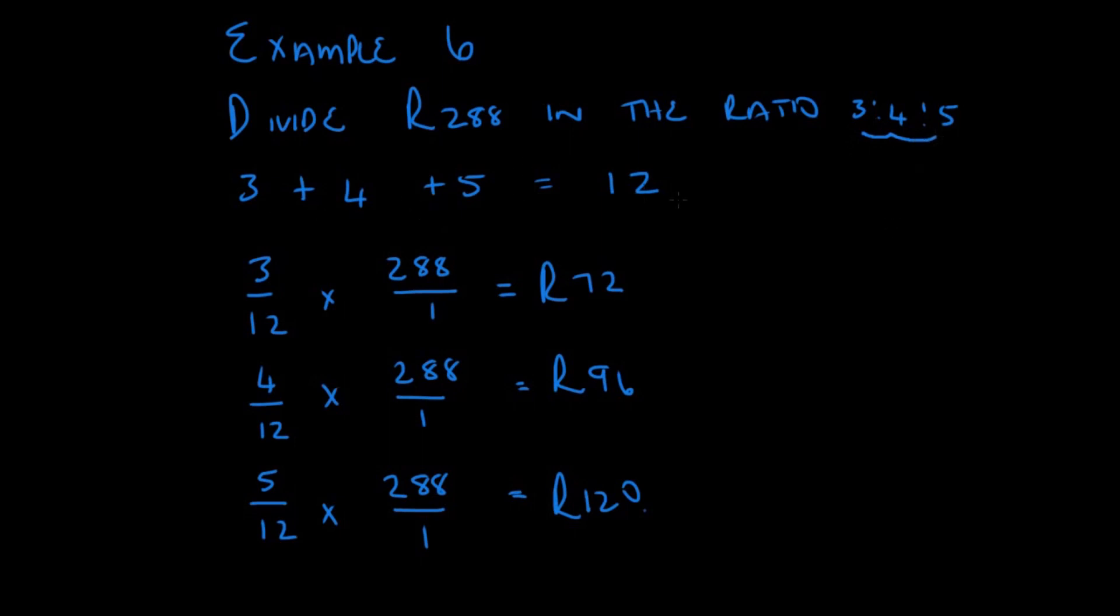So, 3 plus 4 plus 5 is 12. So, the 1 ratio is 3 over 12. The next one is 4 over 12. And the next one is 5 over 12. And what we do is we multiply it by 288 over 1. And this gives us 72 Rand.